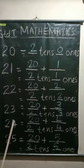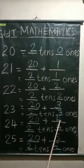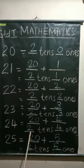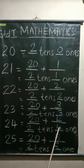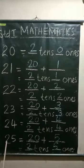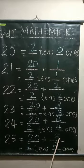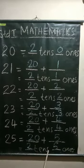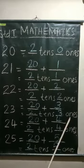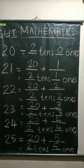Twenty-four: twenty plus four. Twenty-four, two tens, four ones. Twenty-five: twenty plus five. Twenty-five, two tens, five ones.